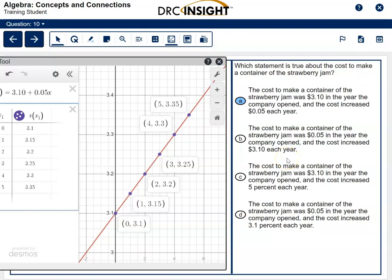It says the cost to make a container was $0.05 in the first year. That's not true. It was $3.10. C says the cost to make a container was $3.10 the first year. That's true, and it increased 5% each year. No, 5% means the amount would change each year. It would go up more and more each time, and it's not doing that.